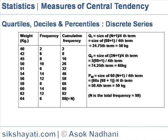Next we show Q1, the first quartile. The size of the (N+1)/4 term is equal to the size of the (98+1)/4 term, which equals the 24.75th term, equal to 50 kg. Q2 is equal to size of the 3(N+1)/4 term, equal to 3 into (98+1)/4 term, equal to the 74.5th term, equal to 60 kg.